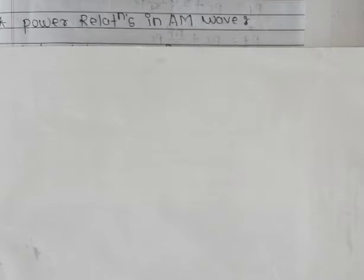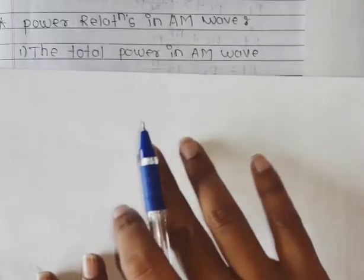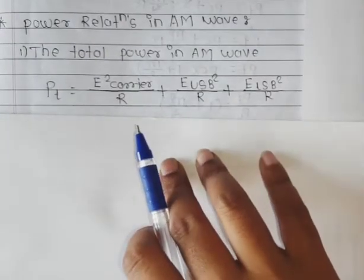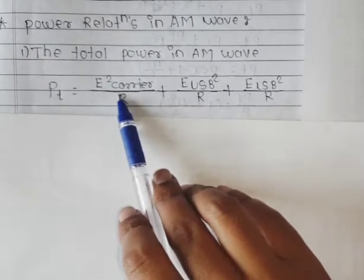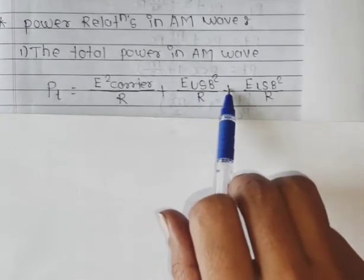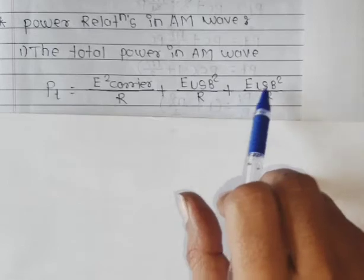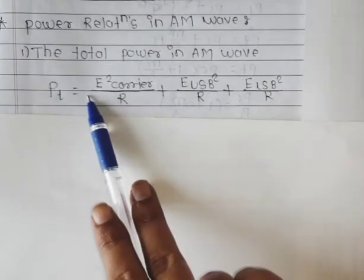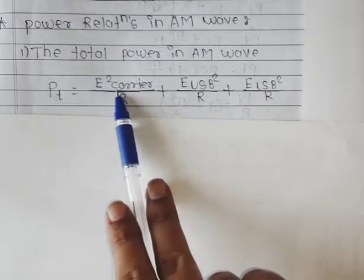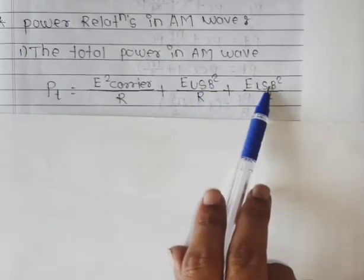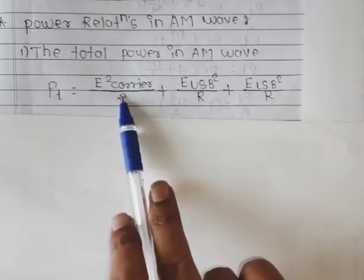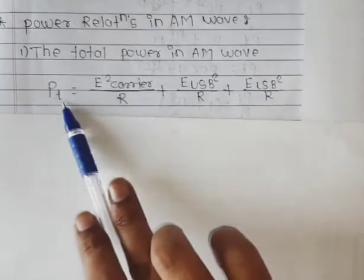Hello students, today we see the next topic: power relations in amplitude modulation wave. The first formula for total power in an AM wave is PT (total power) equals E_carrier squared upon R, plus E_USB squared upon R. Here E_carrier is the RMS value of the carrier, E_USB is the RMS value of the upper sideband, and R is the characteristic resistance of the antenna. PT is the total power.